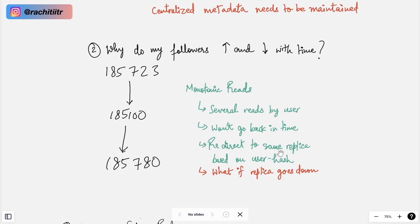A very easy solution is to redirect the user to the same replica based on user hash. This way it will be ensured that all the reads performed by user will never go back in time as the replica will continue to get updated. It will never go back. Since the replica will never go back in time, therefore the user will also never go back in time.